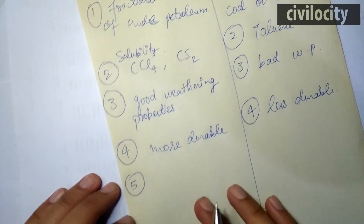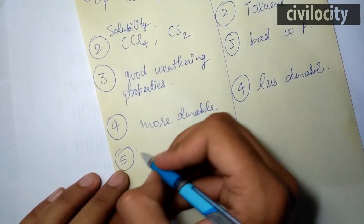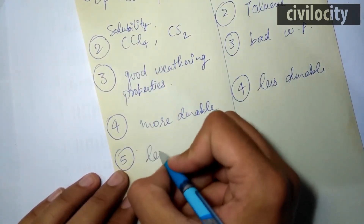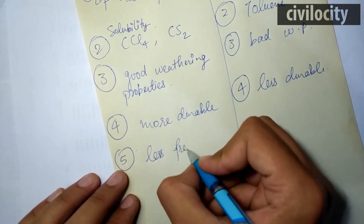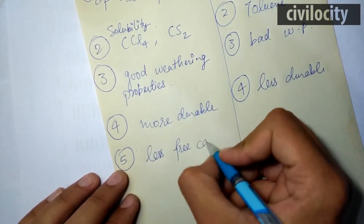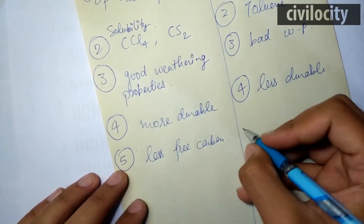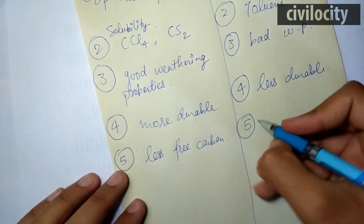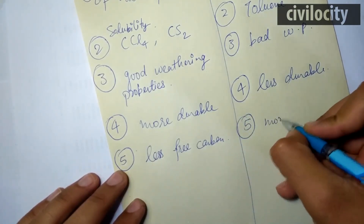The fifth point is free carbon content. Bitumen has very less free carbon — we can find free carbons by solubility test. Tars, on the other hand, possess more free carbons.